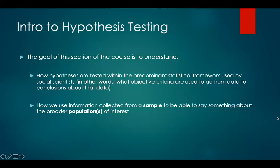The goal of this section of the course is to understand how hypotheses are tested within the predominant statistical framework used by social scientists — what objective criteria are used to go from data to conclusions about these data, and to understand how we use information collected from a sample to say something about the broader populations of interest.